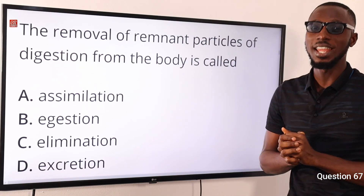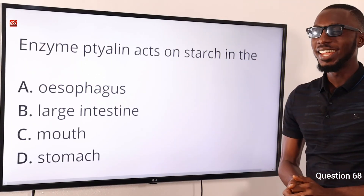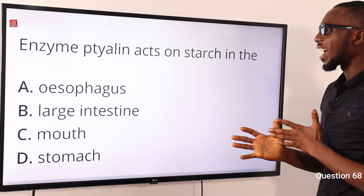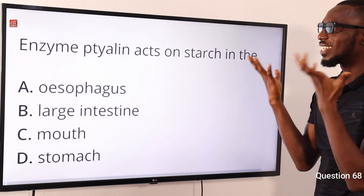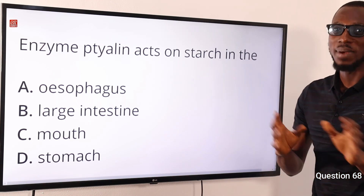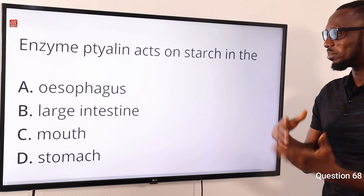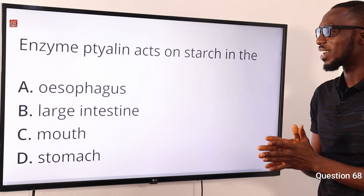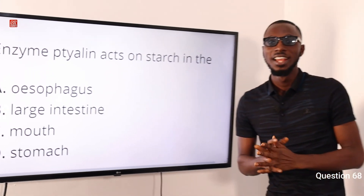Question 68: the enzyme ptyalin acts on starch in what location? Ptyalin is found in the salivary gland and acts in the mouth. It acts on the substrate starch to give maltose and other substances. So the correct option is option C for mouth. We've come to the end of this video segment for biology 2015 — please hit the like button, click subscribe, and tap bell notifications so you get notified as soon as we upload the next video clips.